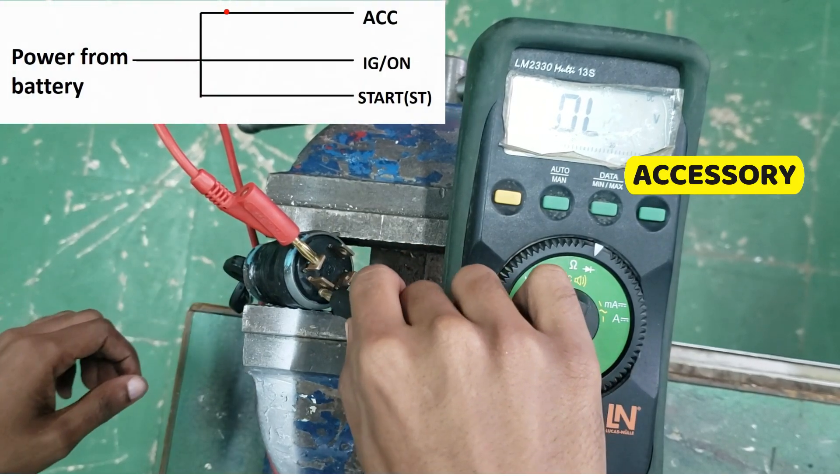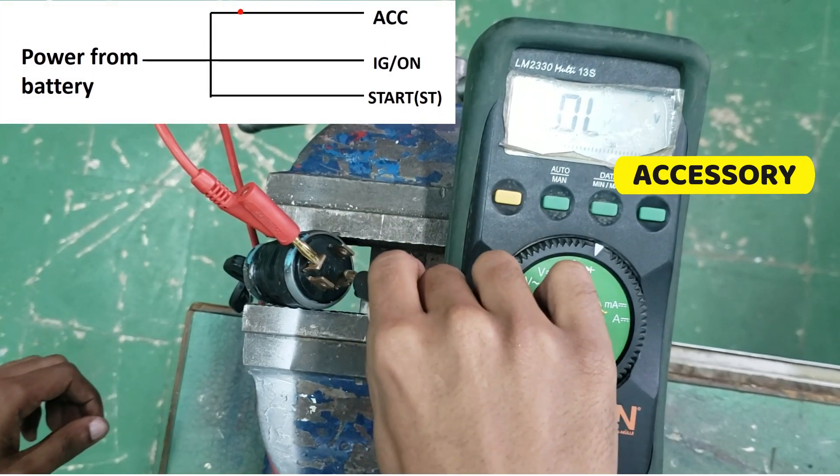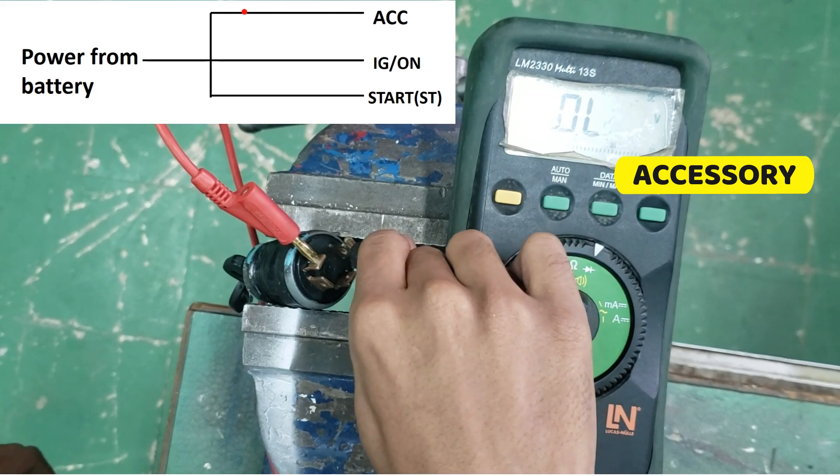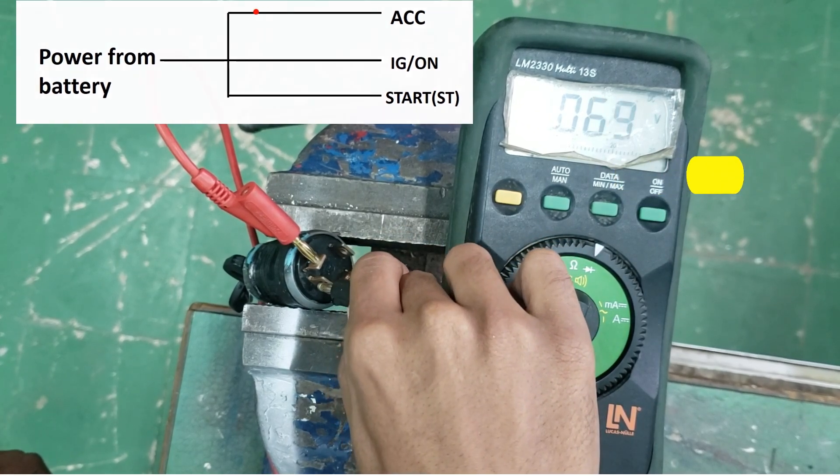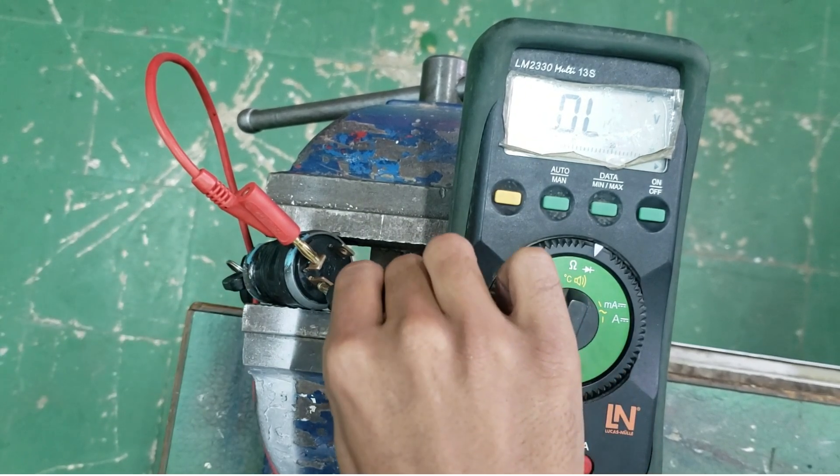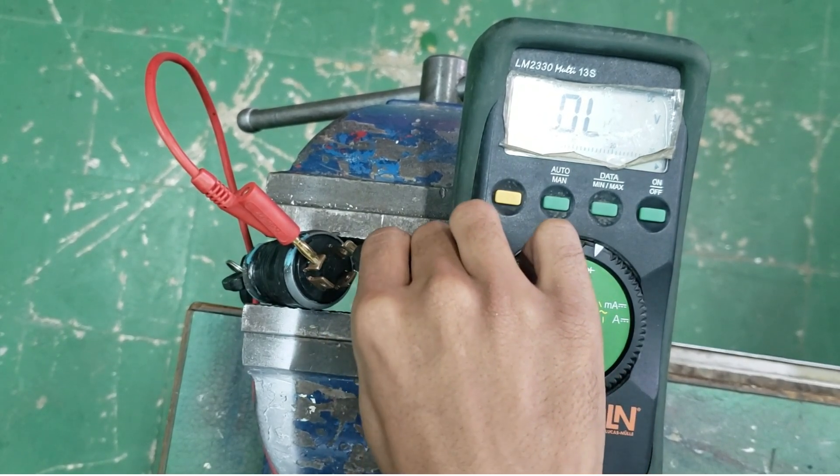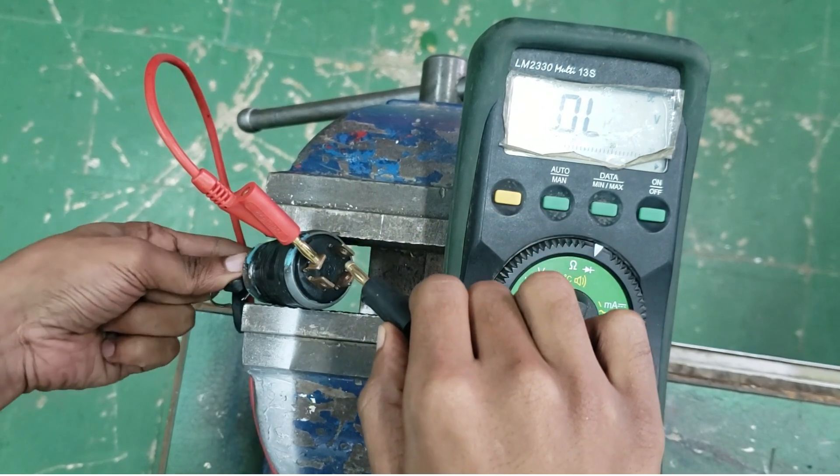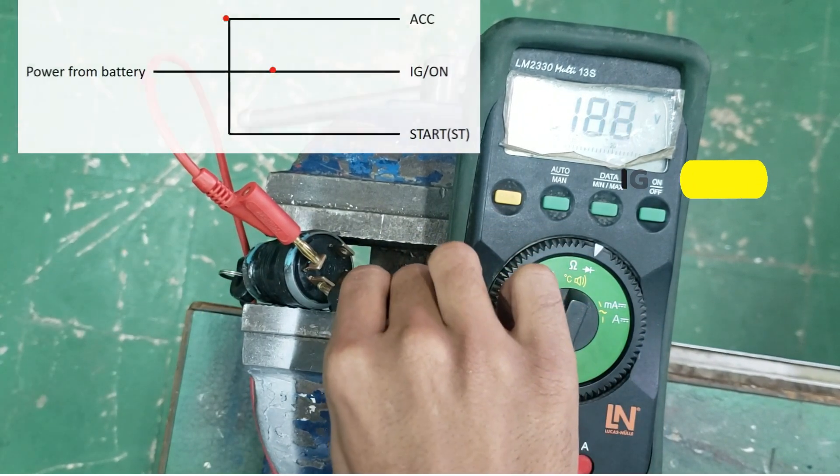The accessory setting activates only the circuits related to accessories in the vehicle. This includes powering features such as the radio, power windows, and interior lights without engaging the ignition or starting the engine.